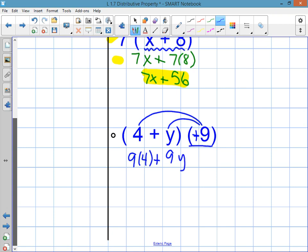And notice I didn't put a little dot between the 9 and the y. I didn't put the y in parentheses because a letter next to a number is implied to be a multiplication. 9 times 4 is 36 plus 9 times y or just 9y. And that's your answer. Okay. Moving on.